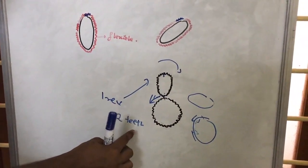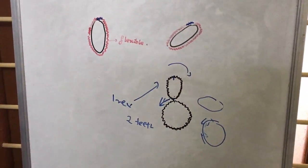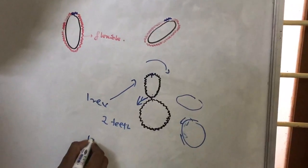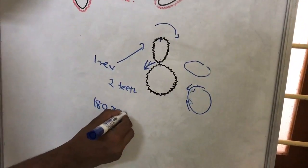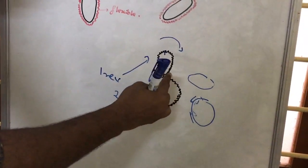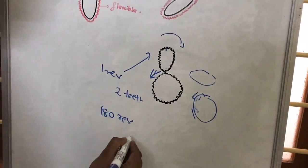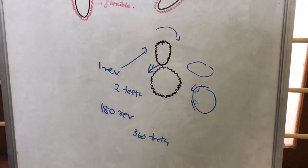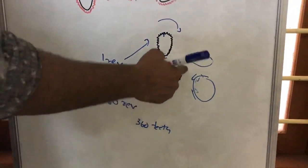If it rotates say 180 revolutions, then what happens is this circular gear moves 360 teeth, somewhat like that. So if there are 360 teeth in this particular gear...